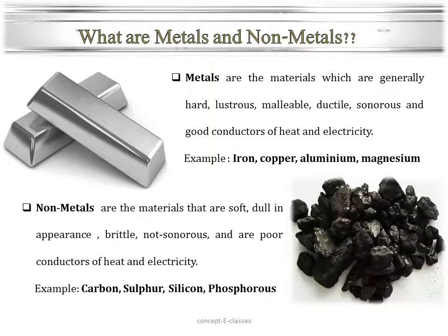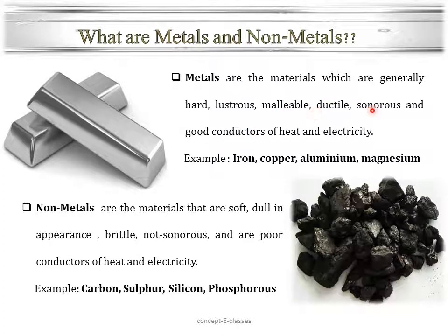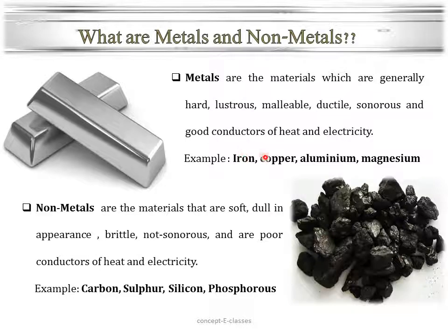What are metals and nonmetals? We can define metals and nonmetals based on their physical and chemical properties. Metals are materials which are generally hard, very lustrous — that is, they give a shiny appearance — malleable, ductile, sonorous, and good conductors of heat and electricity. Such materials are called metals. Examples include iron, copper, aluminium, and magnesium.